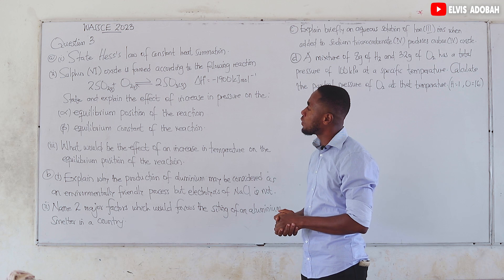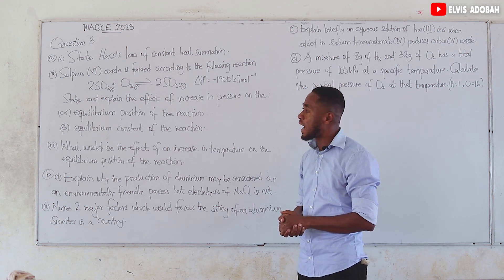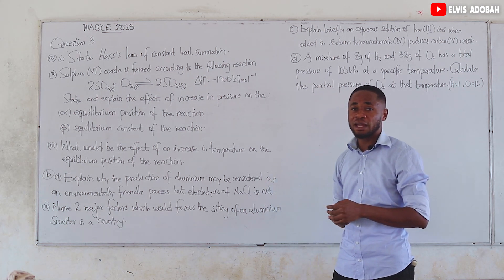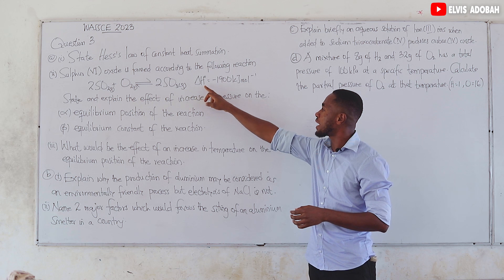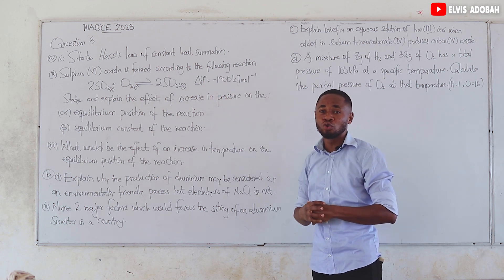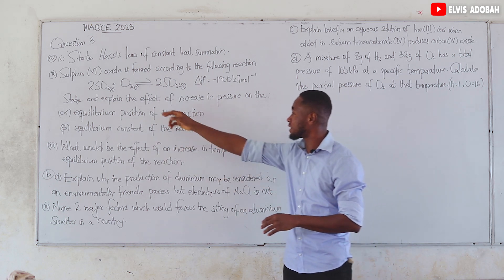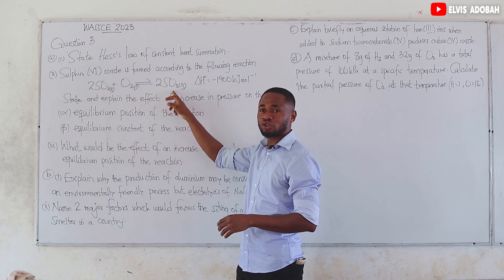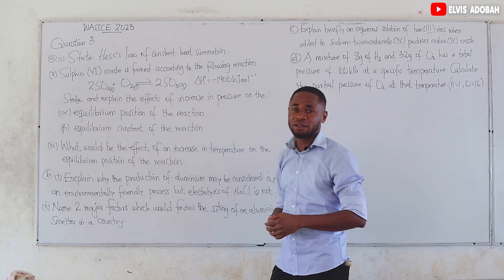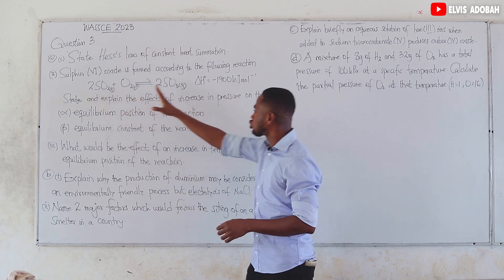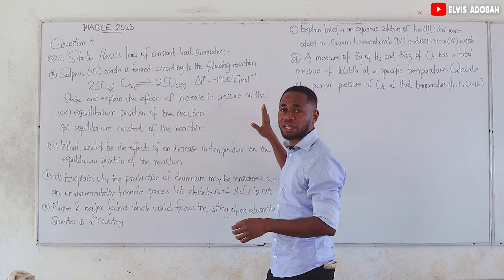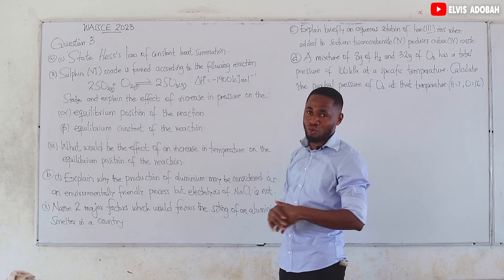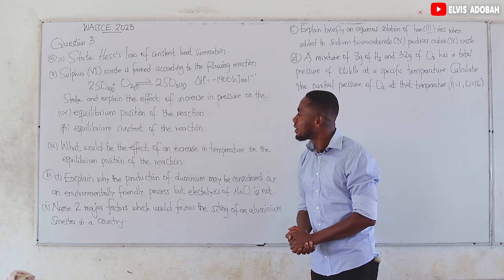Question 3a(ii): Sulfur trioxide is formed according to the reaction: 2SO₂(g) + O₂(g) ⇌ 2SO₃(g), ΔH = −1900 kJ/mol. This is a reversible reaction, meaning the reactants combine to form products and the products also break down back to reactants. When the reaction proceeds forward, it releases 1900 kJ/mol of energy.